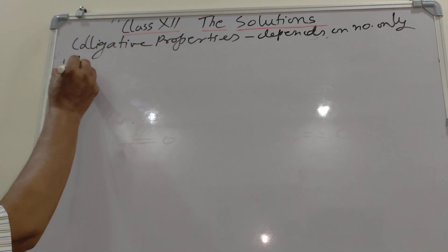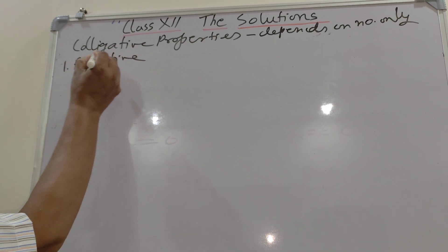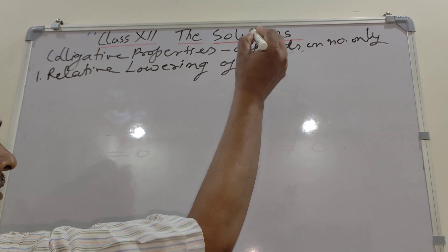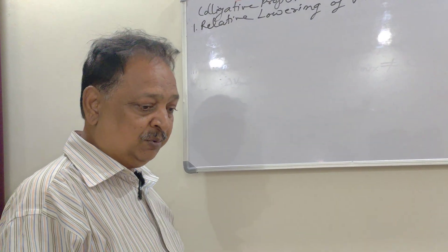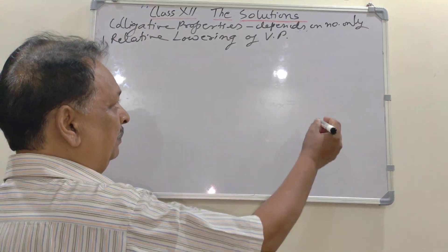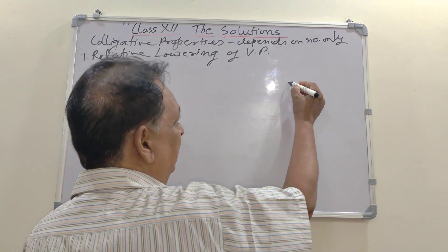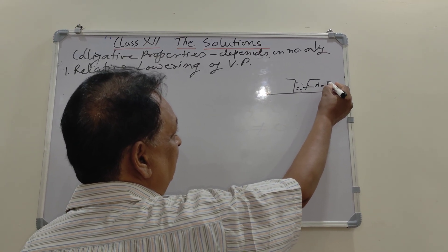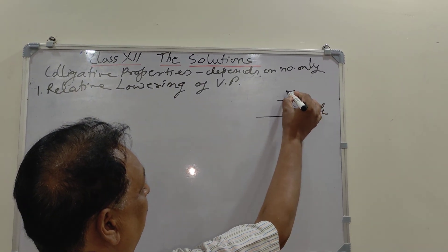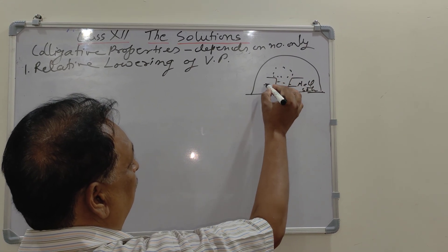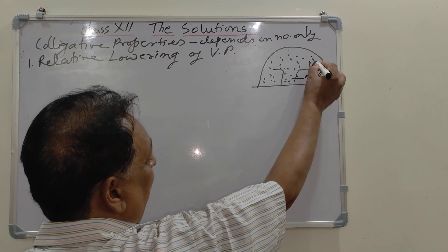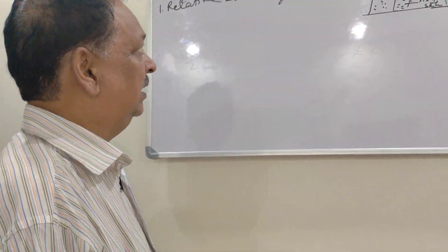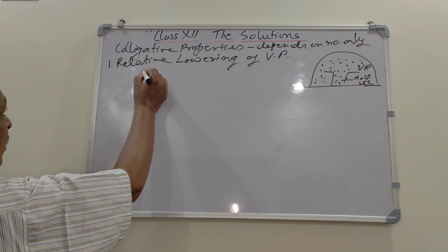The first colligative property is relative lowering of vapor pressure. First you have to understand what vapor pressure is. Vapor pressure relates to a liquid in a closed container. Suppose this is a sealed solution — in a sealed, closed container, equilibrium exists between the liquid and its vapor, and the pressure exerted by that vapor is called vapor pressure.